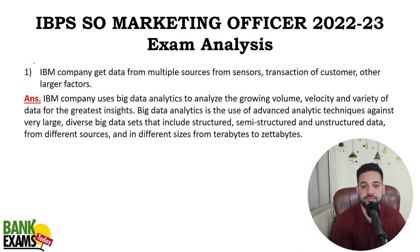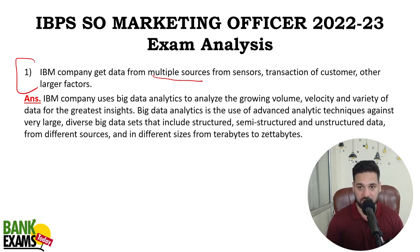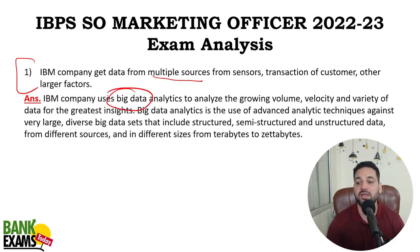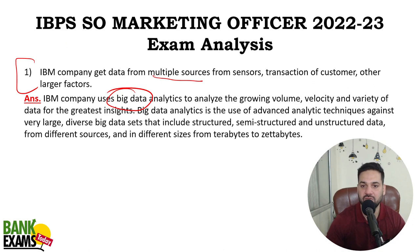The first question: the IBM company gets data from multiple sources — sensor data, transaction data, lots of data — and uses it to help in decision making. This is big data. Big data is the use of advanced analytical techniques to process very large data. We are going to do a proper class on advanced technologies and marketing — big data, data mining, data warehousing — starting Monday.